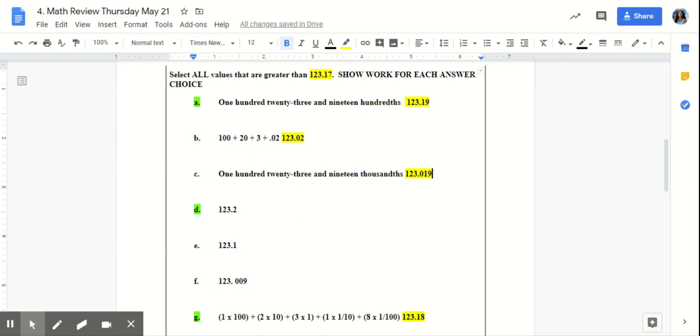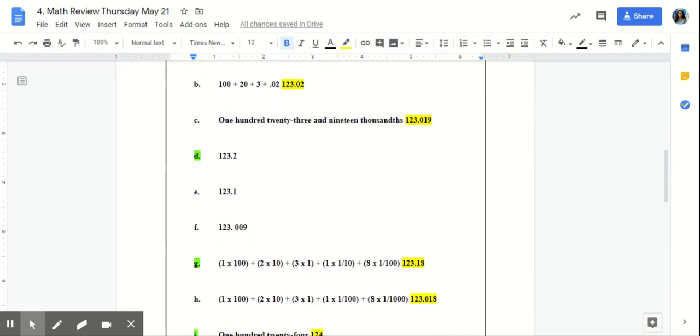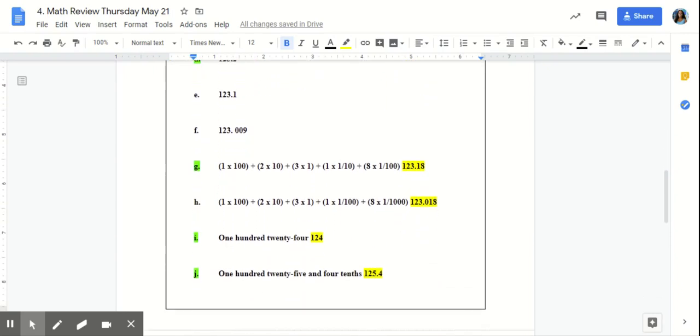So we have 123.19, and it should be written such as the highlighted number right next to it. B, we have expanded form, and we converted it into standard form. Once you've done that step for answer choice A through J,